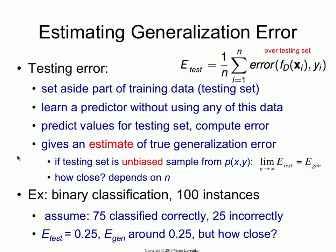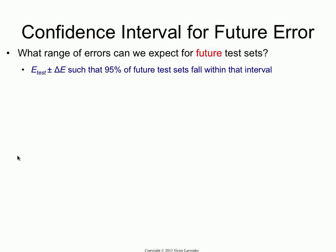So let's go over an example and see how you can actually compute some bounds on the generalization error. Say we have a binary classification task with 100 instances in our test set. We've trained our classifier on the training set, now we're testing on these 100 instances it has never seen before, and we're assuming they're a random sample representative of the joint distribution. Let's say it classifies 75 of them correctly and 25 wrong — using simple misclassification error, your error is going to be 25%. So what do we know about the generalization error? We can estimate a confidence interval for the future error.